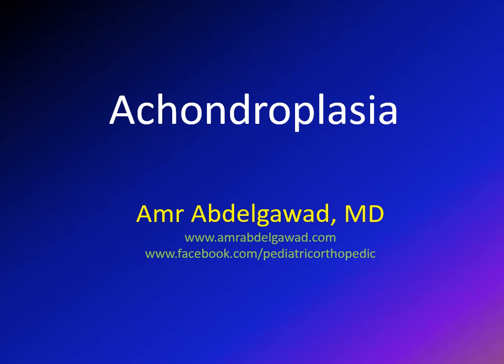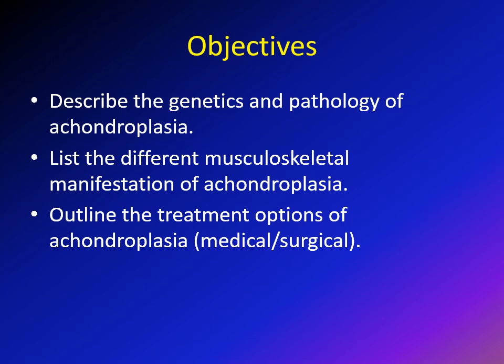Hi, this is Amr Abdi-Gawad and we're going to speak today about achondroplasia. The objectives of this lecture are: first, to describe the genetics and pathology of achondroplasia; then to speak about the musculoskeletal manifestations; and then we're going to speak about the treatment options, both medical and surgical.